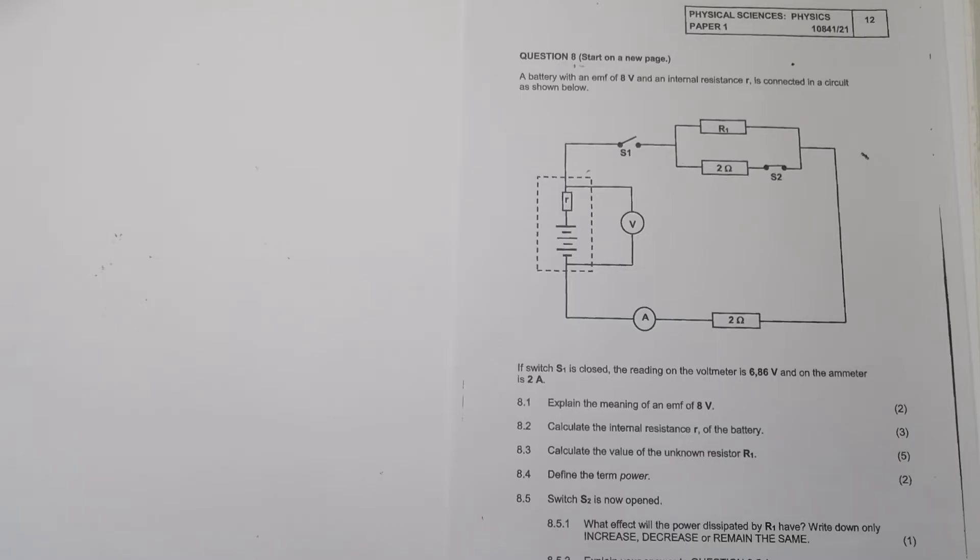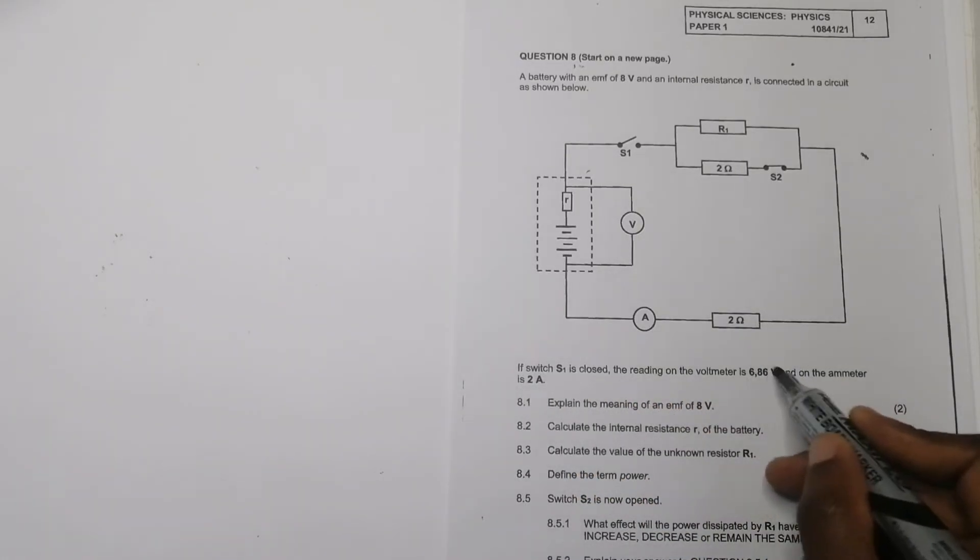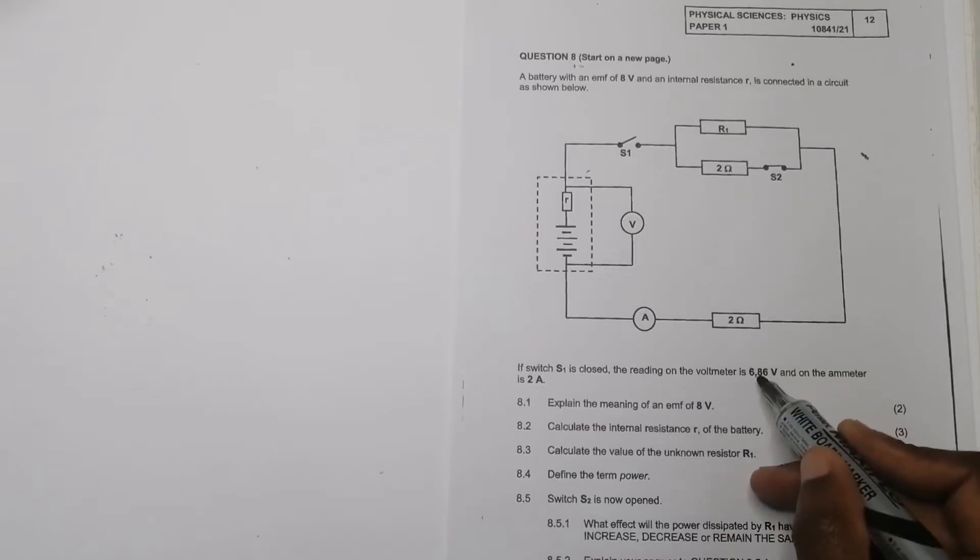They said explain the meaning of the EMF of eight volts. Remember that the EMF, it's the total energy per unit charge across the terminals of the battery or inside a battery. In 8.2, calculate the internal resistance of the battery. Let's have a look. What actually do we have? They've given us the ammeter reading, the external voltage, and the EMF of the cell.